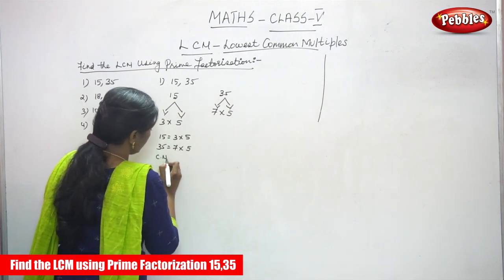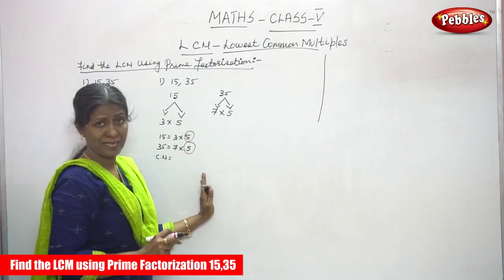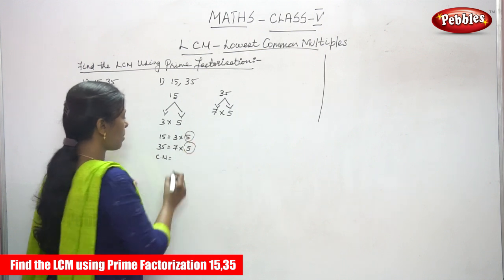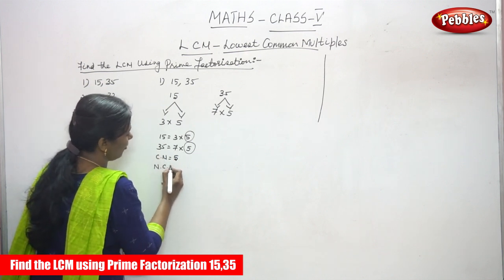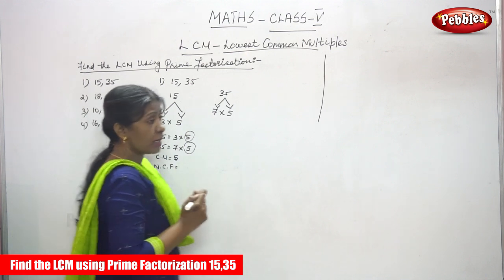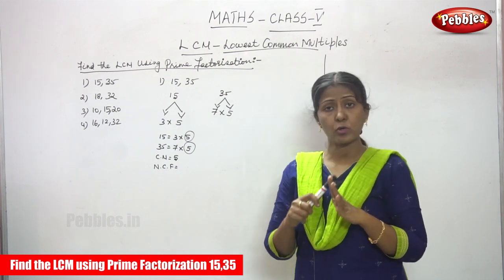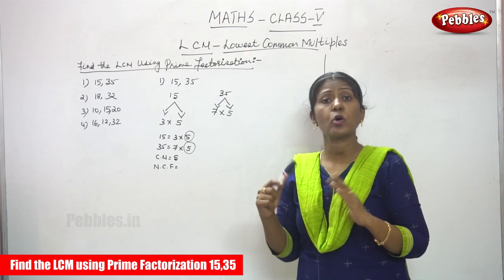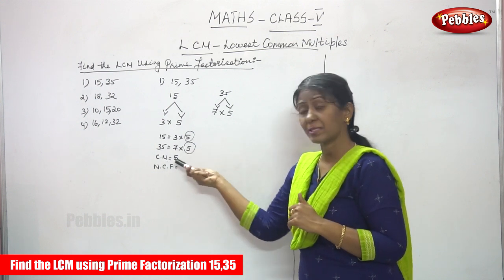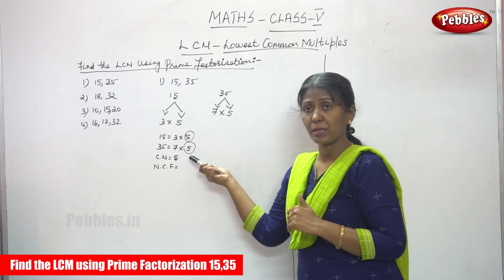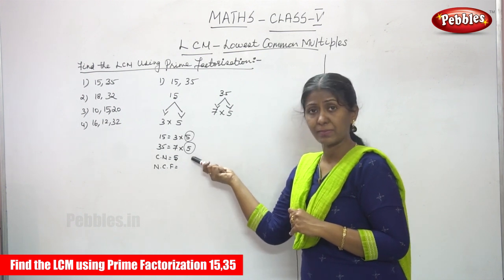After that, you have to find out the common multiples. Circle the 5, because 5 is present in both places. So, the common multiple is 5. CM means common multiples. You have to circle the 5, then write common multiple equals 5.